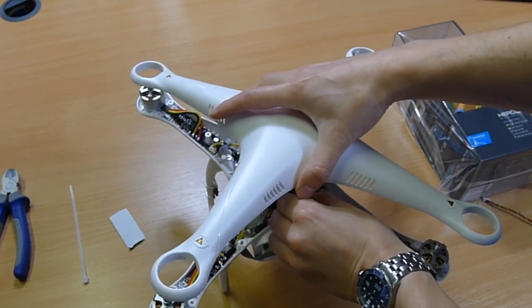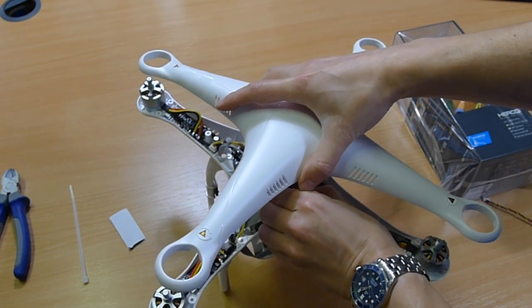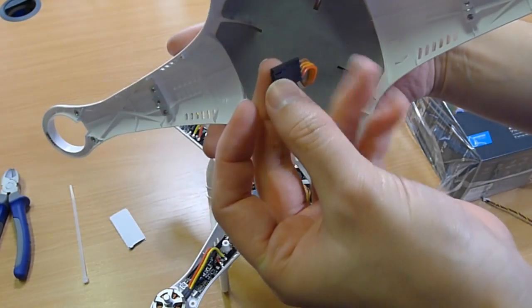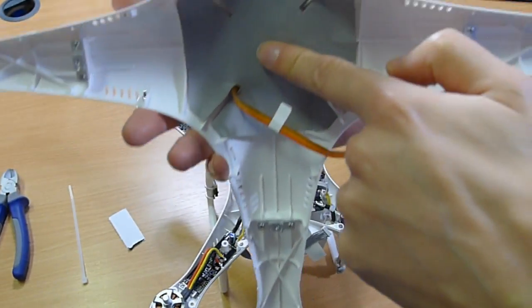You'll see the GPS is connected, it's dead easy though, and just pull that out and you'll see the GPS comes out. There's the GPS and compass in the top there.